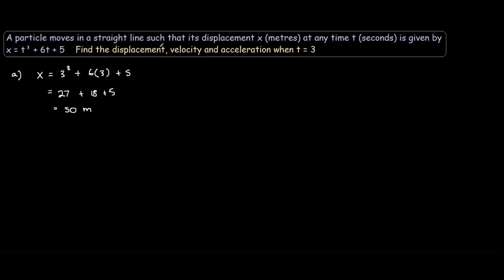For part b of the question, which is asking us to find the velocity, this is where differentiation comes in handy. Because if you remember from basic physics or just any real-life example, velocity equals displacement divided by time, or rather distance divided by time. There's a slight difference, but we'll just call it distance divided by time.